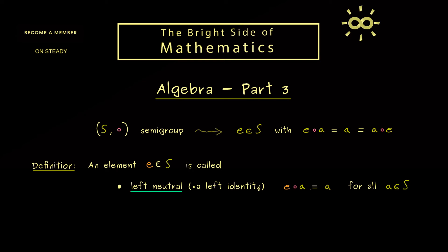And then you also know how we can define the attribute right neutral. And also here very often you see that E is called a right identity. And now not so surprising, this means if you apply E from the right hand side you don't change any element A in S.